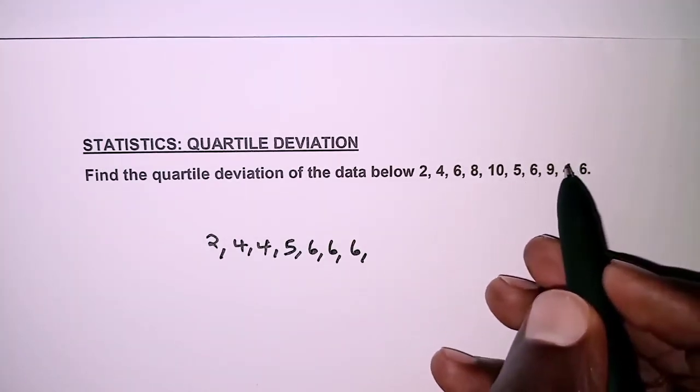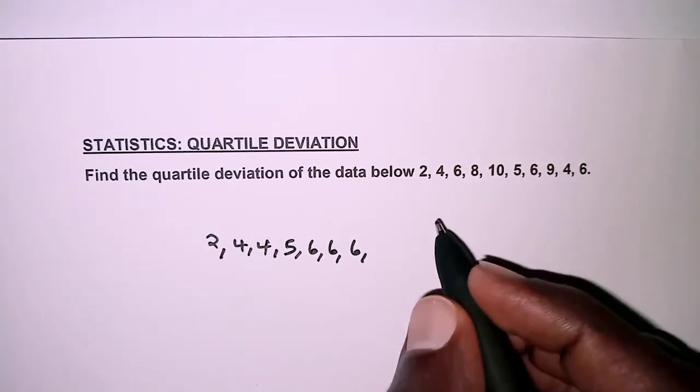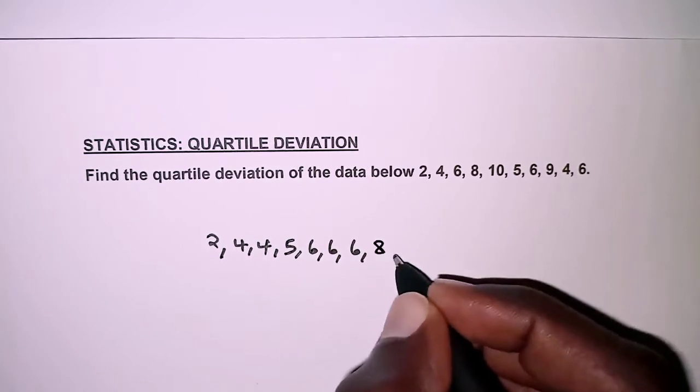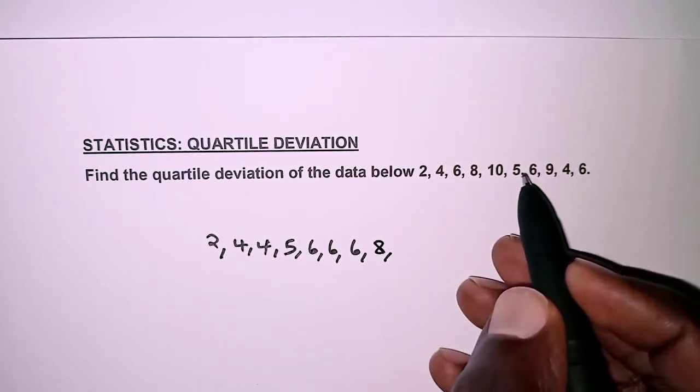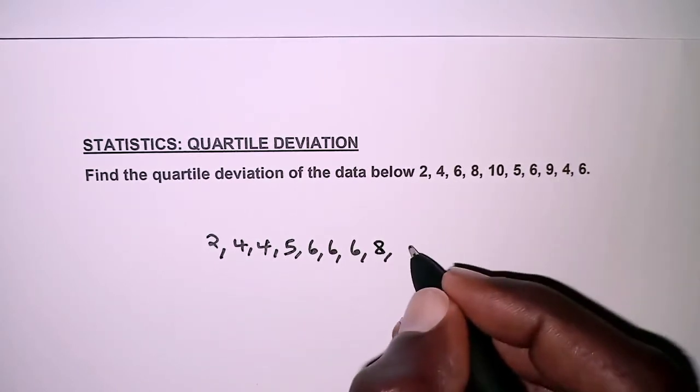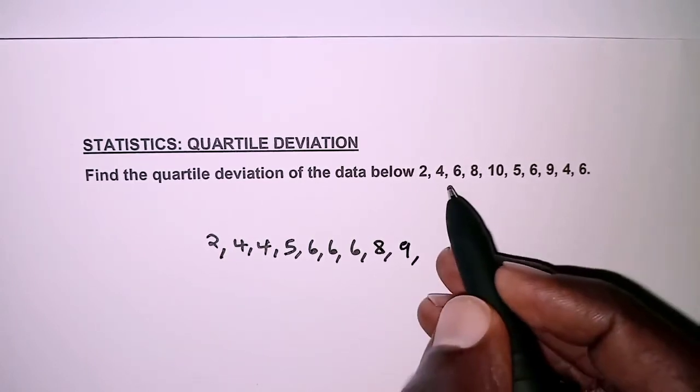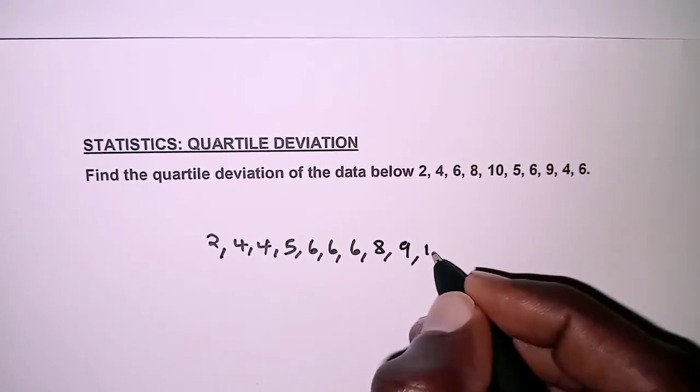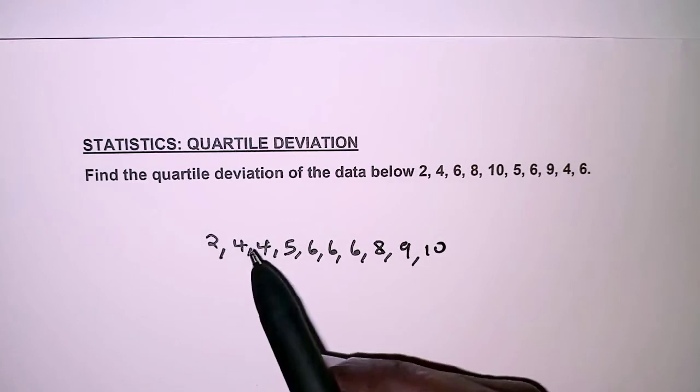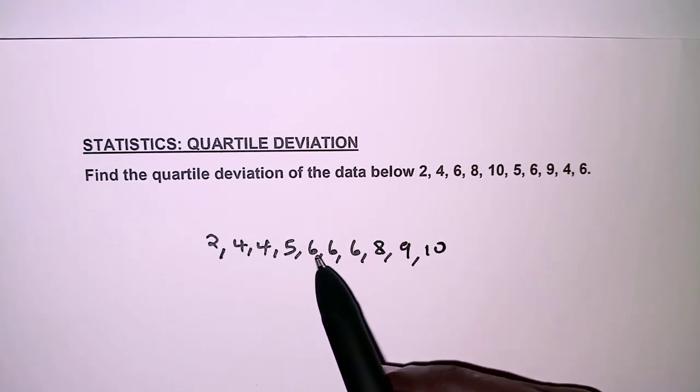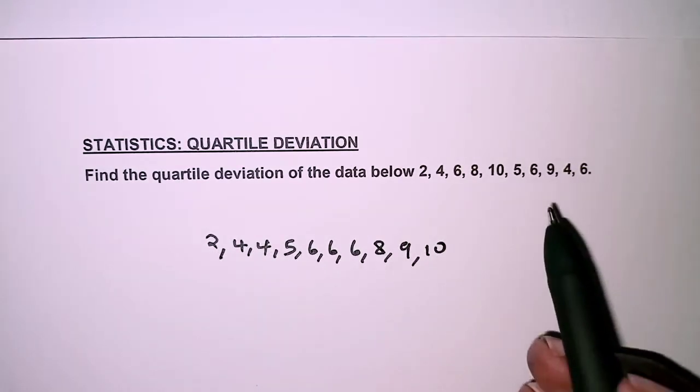And then for 7 there's no 7. For 8 so far we only have 1, so 8. And then for 9 we only have 1. And finally 10 we only have 1.